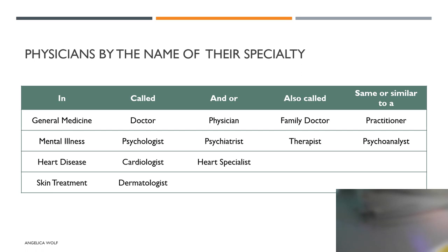Physicians are called by the name of their specialty. In general medicine it's called doctor or physician, also called family doctor or practitioner. For mental illness we have a psychologist, a psychiatrist, a therapist, or a psychoanalyst. In heart disease we have a cardiologist or heart specialist. In skin treatment we call it dermatology.